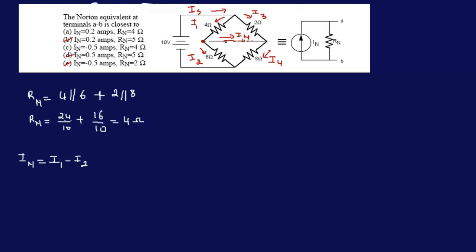Now we need to find I1 and we need to find I2. What's I1? This is a parallel circuit here, so I1 would be - we can use current divider - it would be 2 over 4 plus 2 times the total current coming in, the source current, times IS. What's I2? I2 is 8 over 6 plus 8, which is 14, times IS.